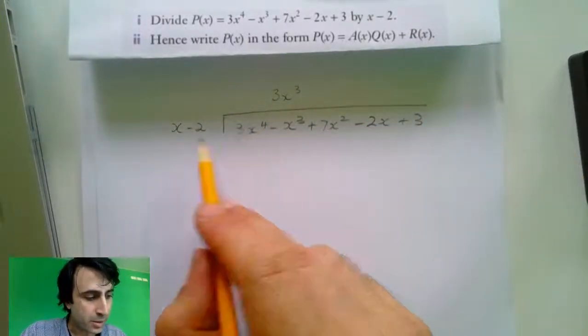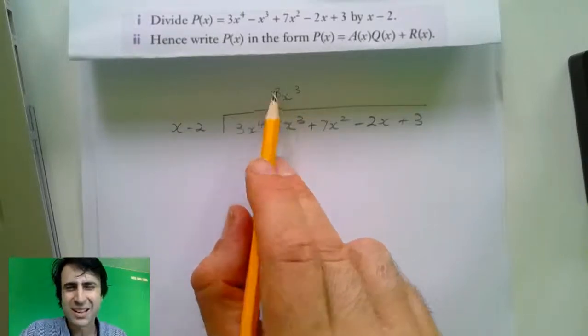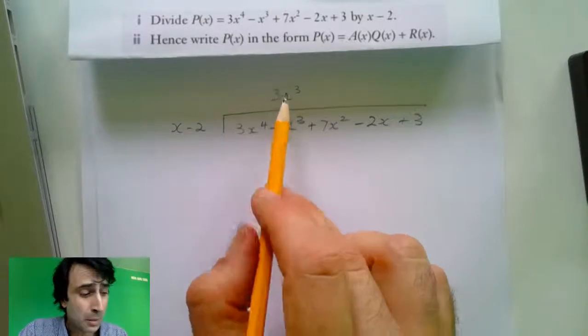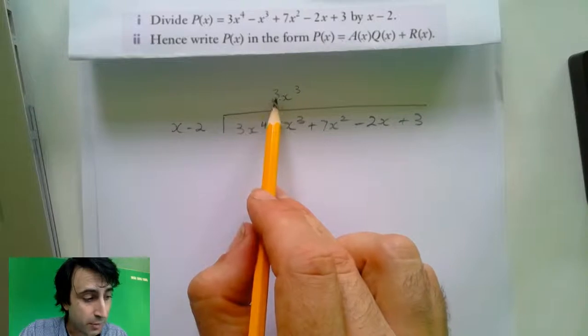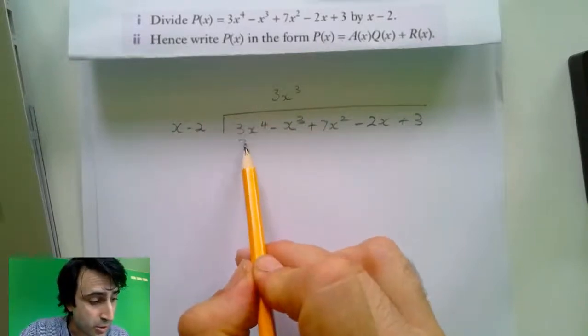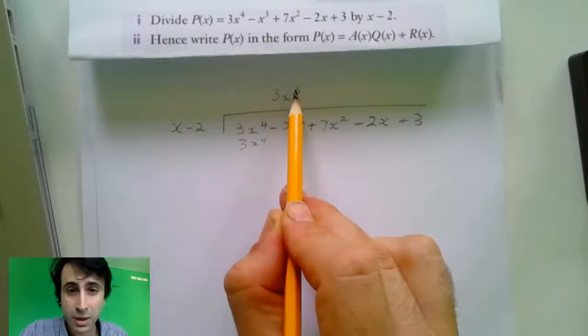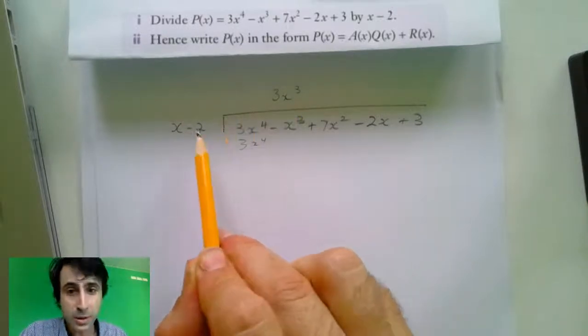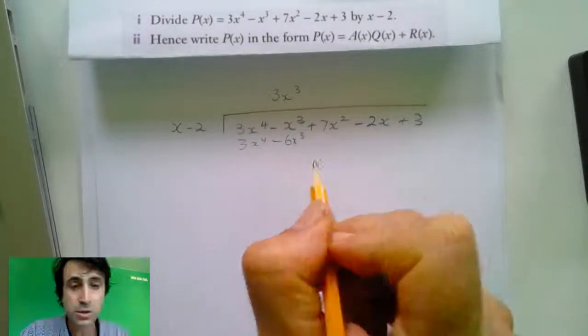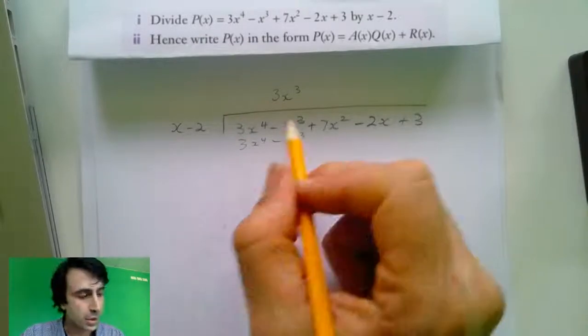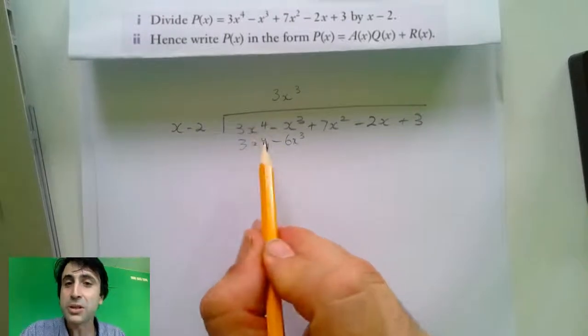Now, why do we write it there? It's because there's two terms here and so we write it over the second term. Now, that's counterintuitive, but the reason why we do it is because now we say, how many if 3x cubed times by x is 3x to the power of 4? Now, what is 3x to the power of 3 times by negative 2? And that equals minus 6x cubed. So because we've got two terms there, we write it over the second term. And now what we've got is the same situation as in long division.